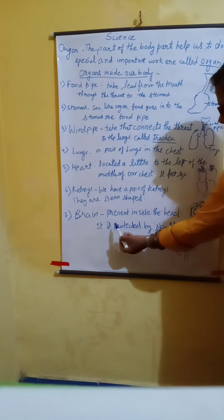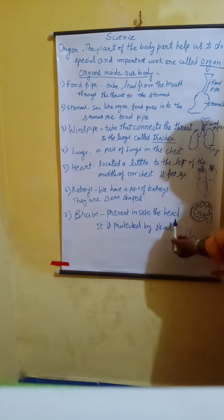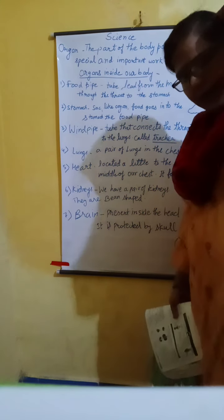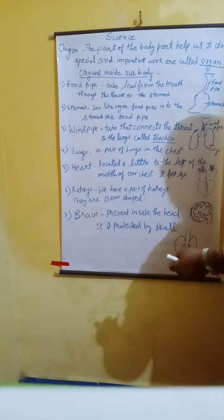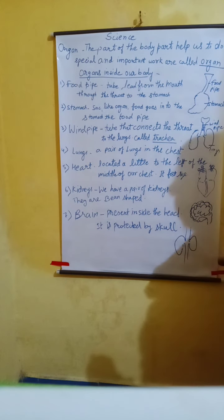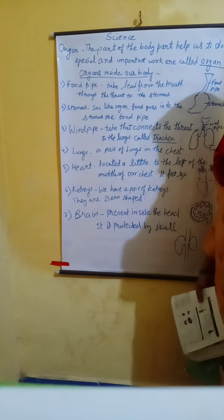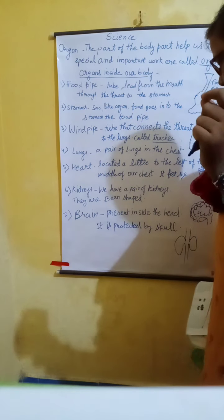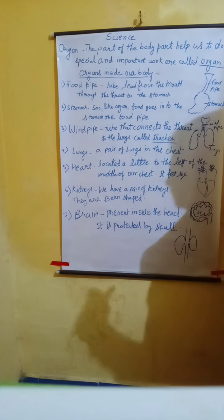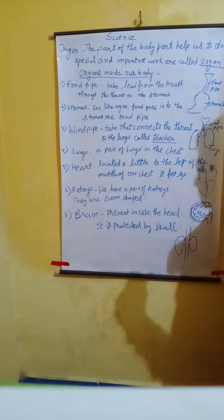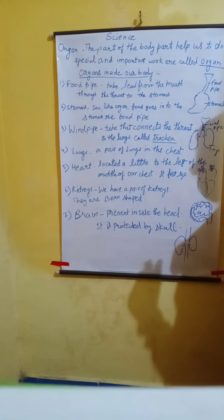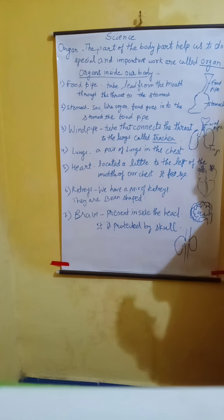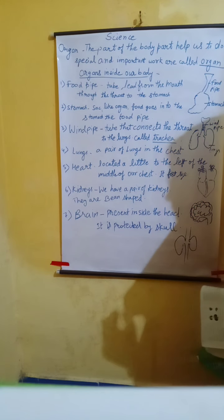The next organ is the brain, which is present inside our head. It is protected by the skull. The brain is a very delicate organ and it helps in learning, intelligence, thinking, and so on. The brain helps in the nervous system. If we have a problem in our brain, we will not be able to understand our system.